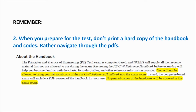The second thing you should remember is when you prepare for the test, don't print a hard copy of the handbook and codes — instead, navigate through the PDFs. The Civil Reference Manual states you will not be allowed to bring your personal copy of the PE Civil Reference Handbook in the exam room. Instead, the computer-based exam will include a PDF version of the handbook for your use, and no printed copies will be allowed.